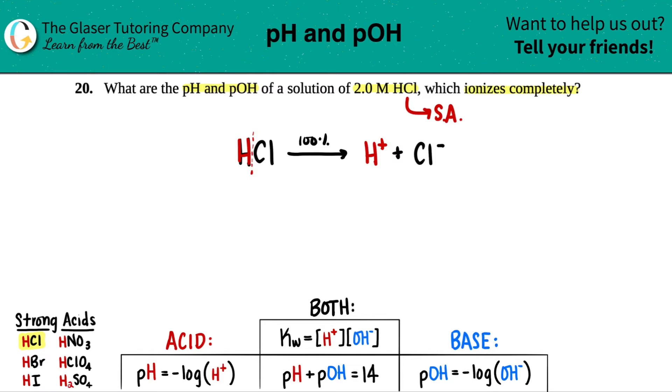Now they did say that we started off with 2.0 molarity of HCl. Well, but how are we going to know how much H plus and Cl minus we have? Well, at the end of the day, we're not going to have any of this. And all the two molarity is going to be distributed between H plus and Cl minus.